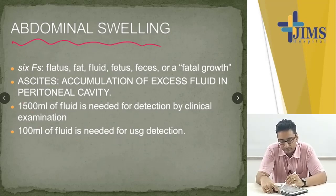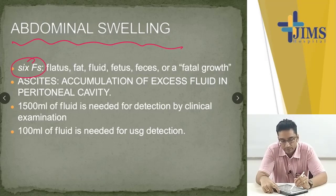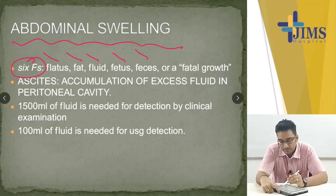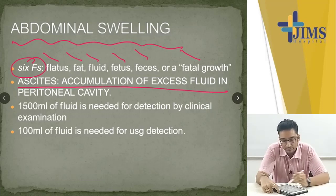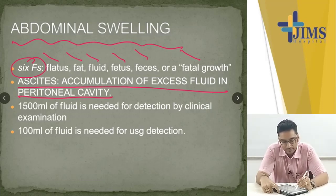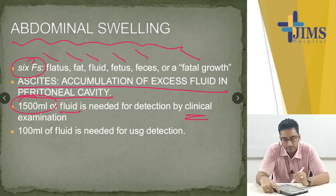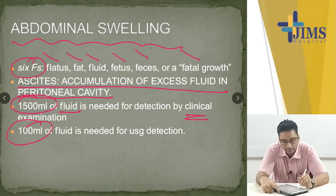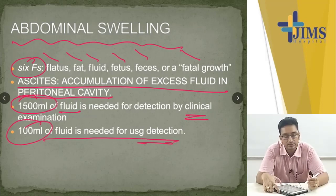Abdominal swelling has 6 F causes: flatus, fat, fluid, fetus, faeces, and fatal growth (malignancy). Ascites is the accumulation of excess fluid in the peritoneal cavity. At least 1500 ml of fluid is needed for detection by clinical methods, and 100 ml of fluid is needed for USG detection.